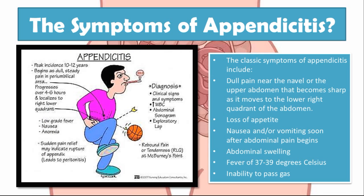Now let's talk about some symptoms of appendicitis. The classic symptoms include a dull pain near the navel or upper abdomen that becomes sharp as it moves to the lower right quadrant of the abdomen, loss of appetite, nausea and/or vomiting soon after abdominal pain begins, abdominal swelling, a fever between 37 and 39 degrees Celsius, and an inability to pass gas. The peak incidence of appendicitis is actually between the ages of 10 and 12, so preteens and teens are most commonly affected. The pain usually begins as a dull, steady pain in the peri-umbilical area and then progresses to the right lower quadrant. The patient will also suffer low-grade fever, nausea, and anorexia.